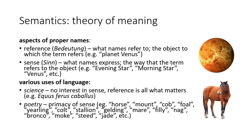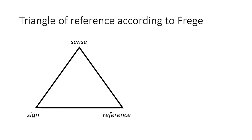Frege was interested in the relation between reference and sense, as you can see in the next diagram. This is the third and last triangle — the triangle of reference according to Frege. We have signs, let's say signs for proper names — for example, 'morningstar.' Every sign has two aspects: sense and reference. Reference is a usually material object that exists in the material world. Sense is the way how to express the meaning, its reference. There may be many senses for the same reference, and every sign has both at all times.